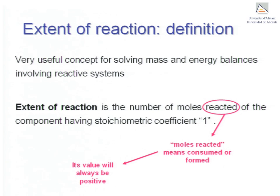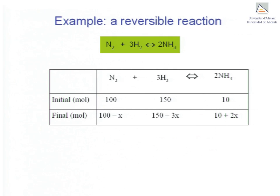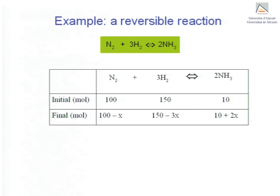Let's begin by considering the following example. Imagine that you have a closed reaction vessel in which a reversible reaction is taking place. You should be familiar with the following from secondary school chemistry. This table shows the initial and final situations. The first row describes the initial situation and shows the number of moles in the vessel before reaction. There are 100 moles of nitrogen, 150 moles of hydrogen, and 10 moles of ammonia initially. After reaction and according to the reaction stoichiometry, the final situation will correspond to the second row of the table.